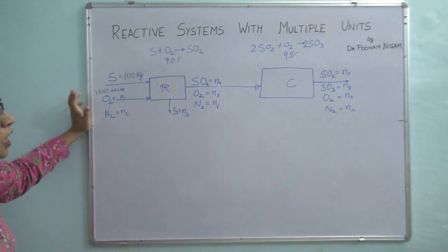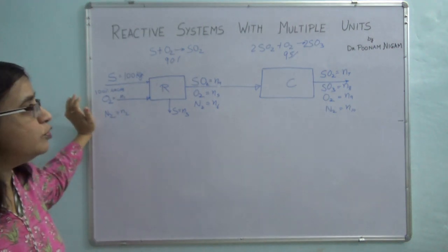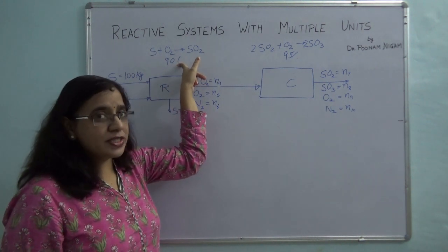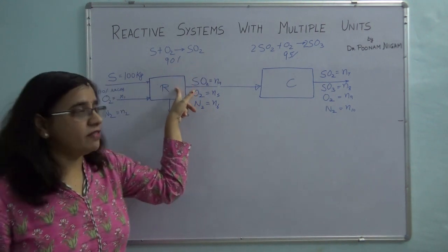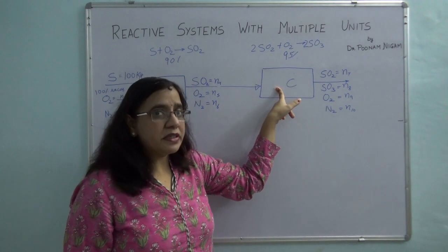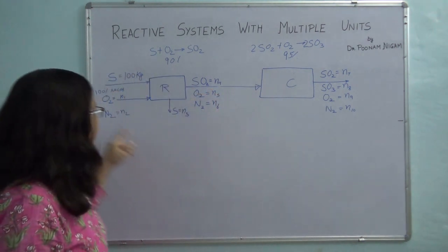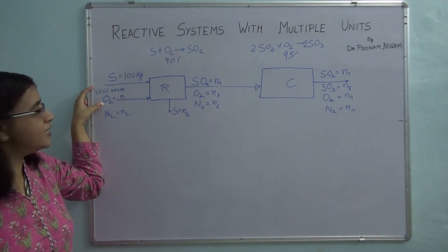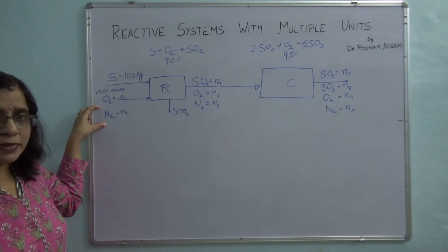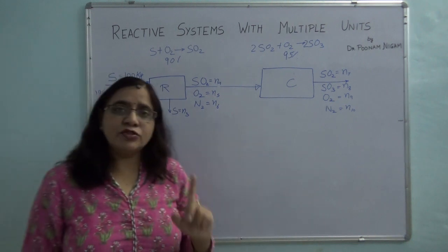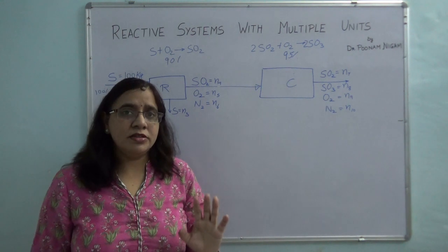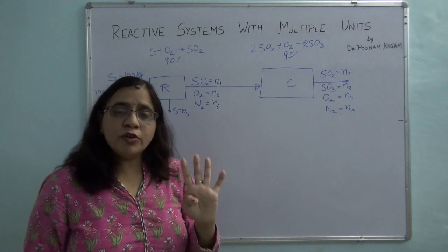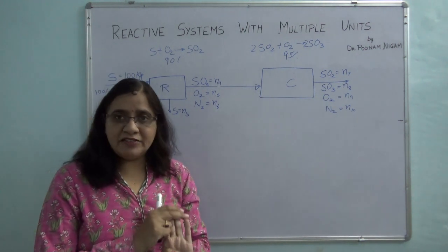We are asked to find how much air is required per 100 kg of sulfur. Some process specifications are given to make the degree of freedom zero: 90% conversion in the reactor, 95% conversion in the converter, oxygen used in 100% excess, and the fixed nitrogen-to-oxygen ratio in air. In total, four process specifications are given in this problem.